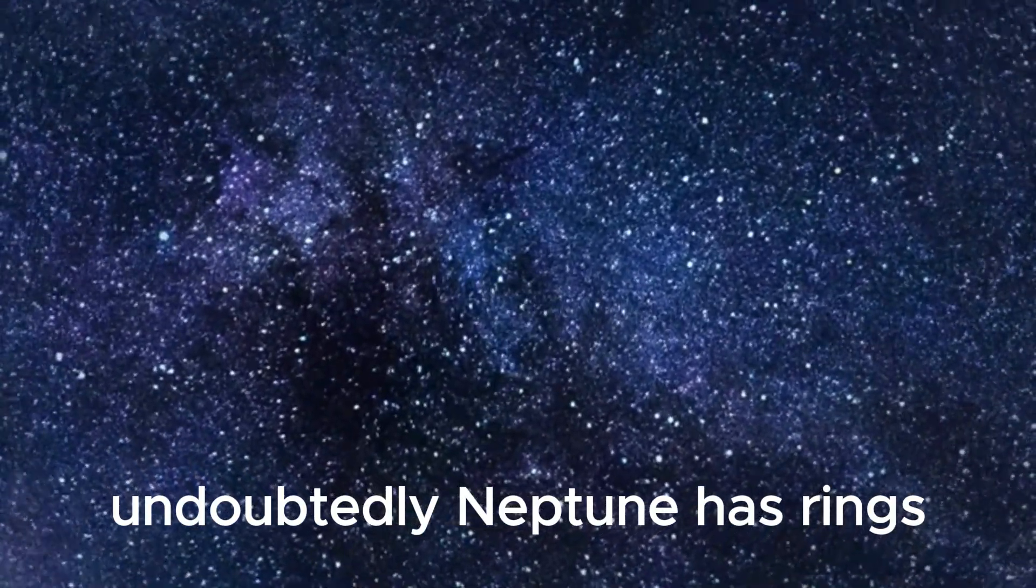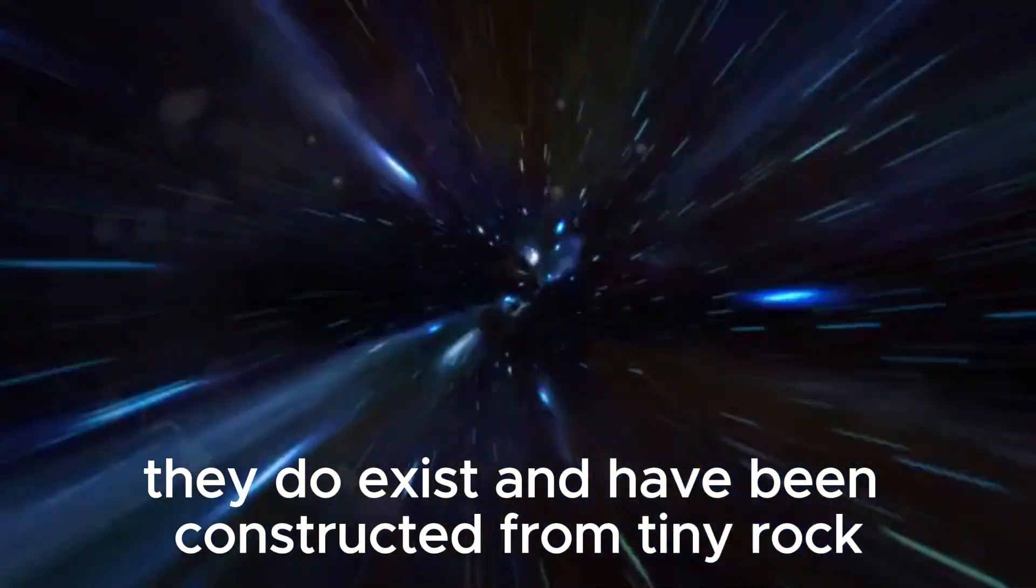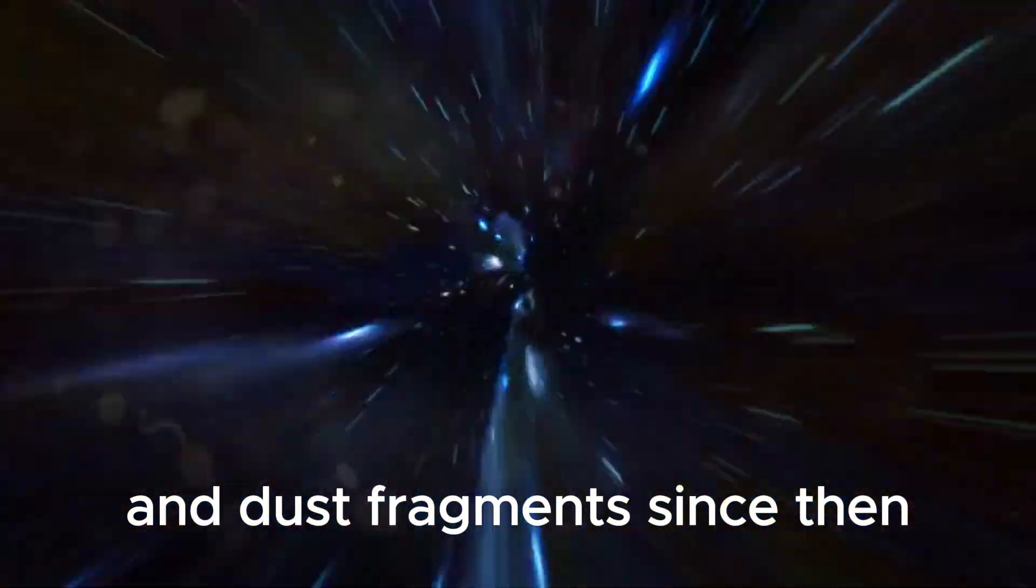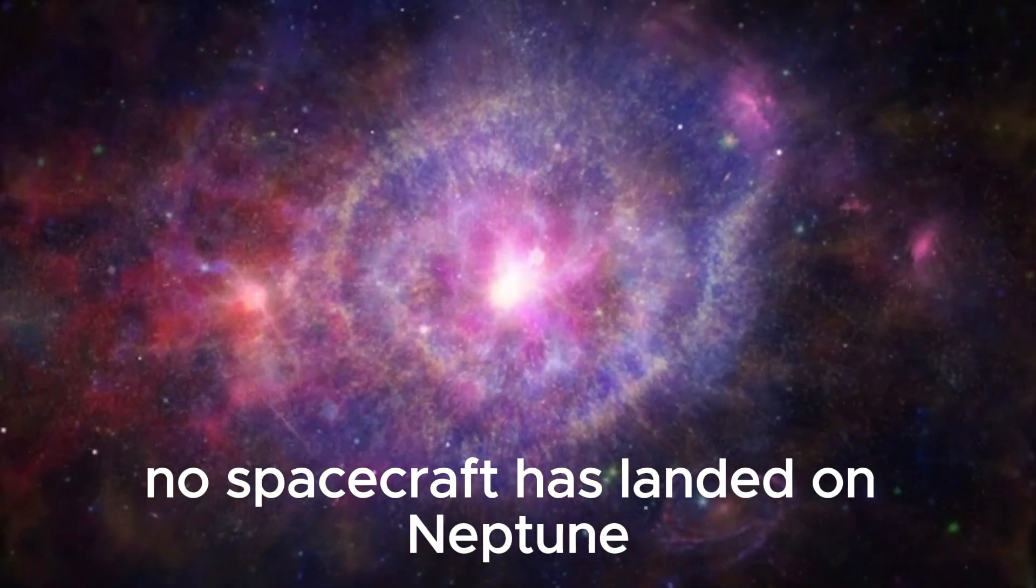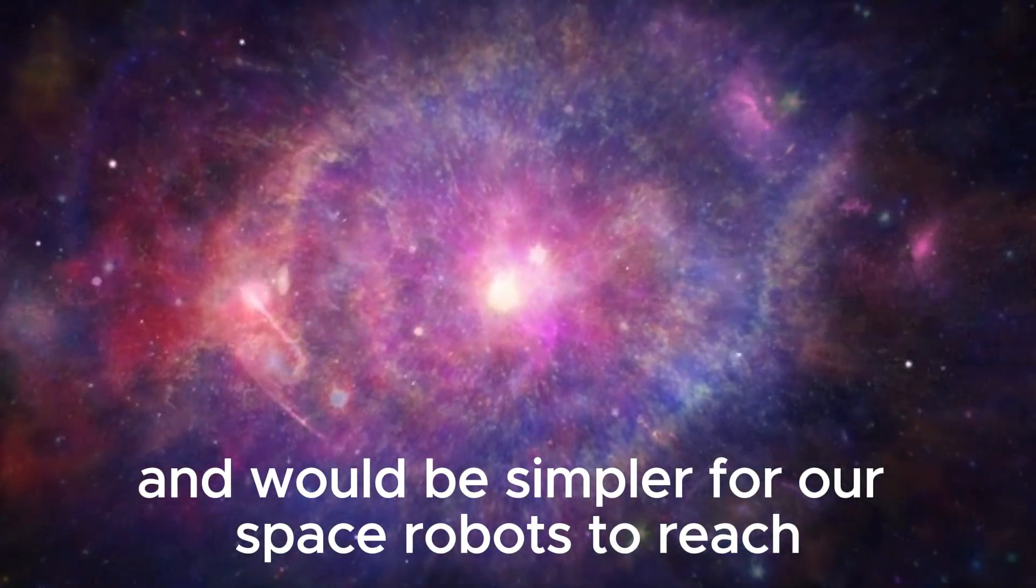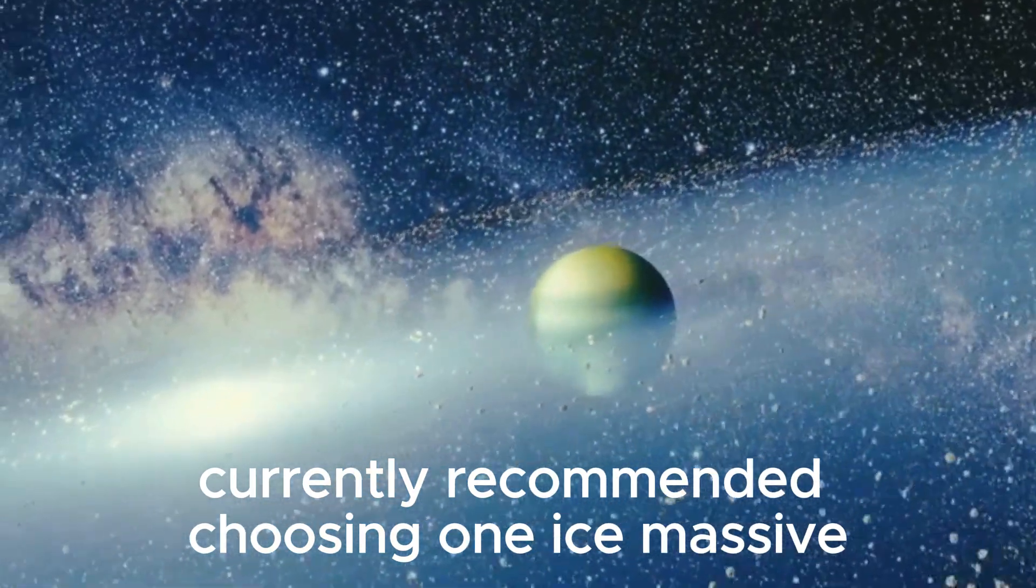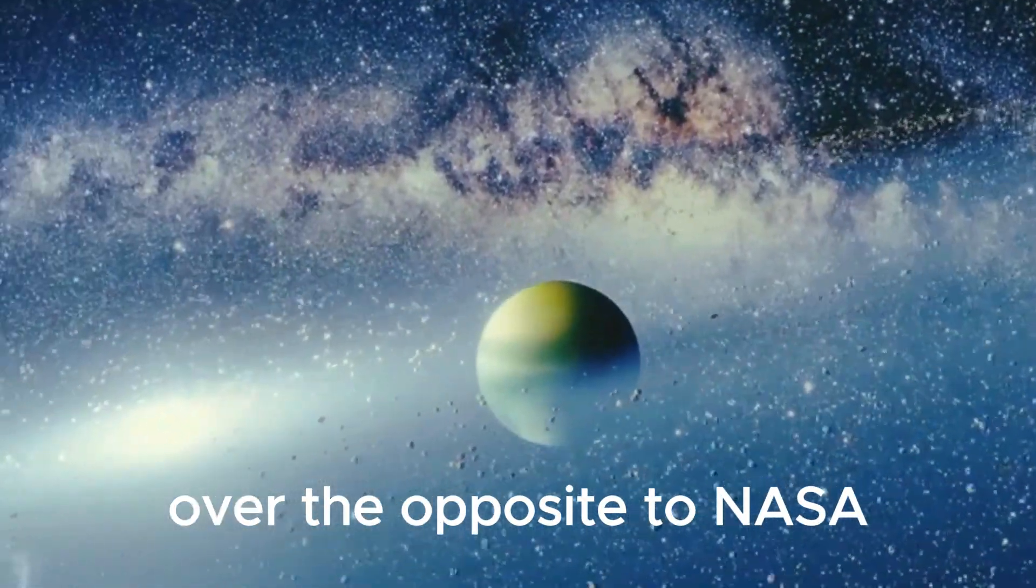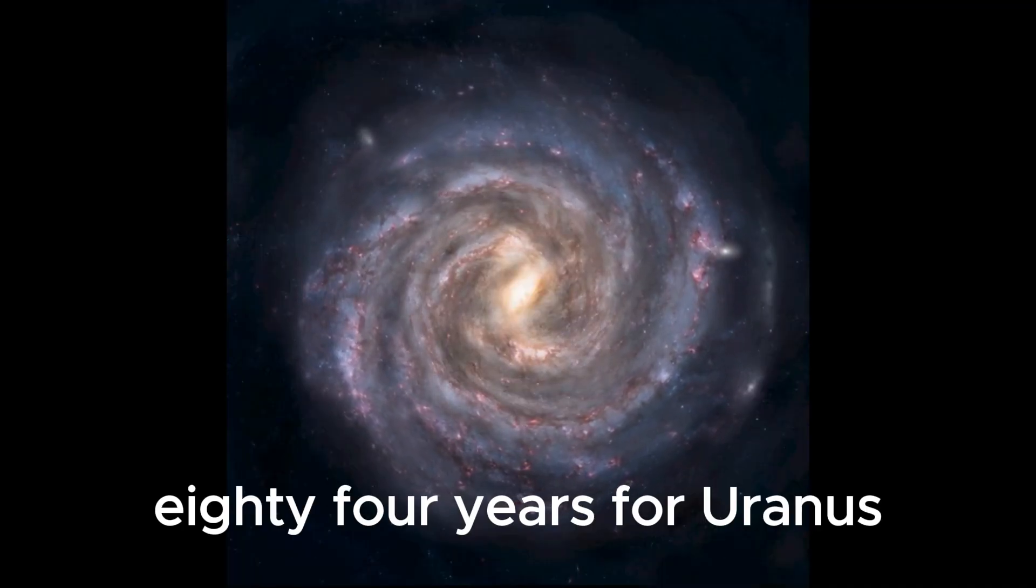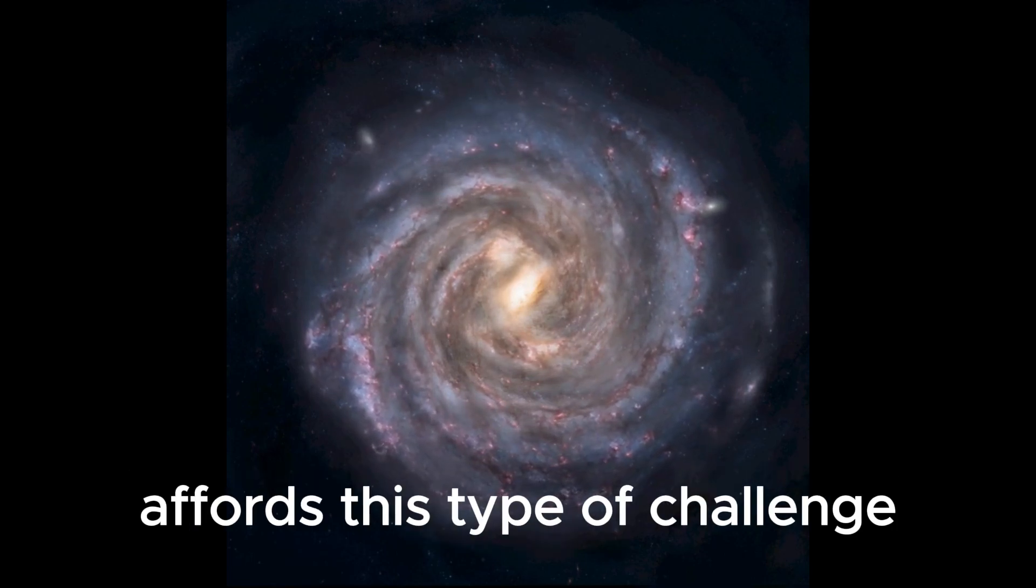They do exist and have been constructed from tiny rock and dust fragments. Since then, no spacecraft has landed on Neptune because Uranus is closer and would be simpler for our space robots to reach. Planetary scientists currently recommended choosing one ice massive over the opposite to NASA. Exploring planets that take so long to orbit the Sun, 84 years for Uranus and an excellent 165 years for Neptune, affords this type of challenge.